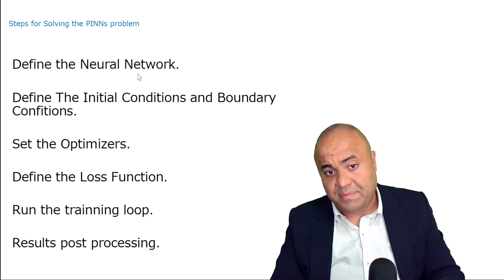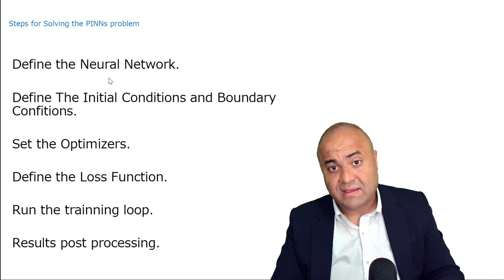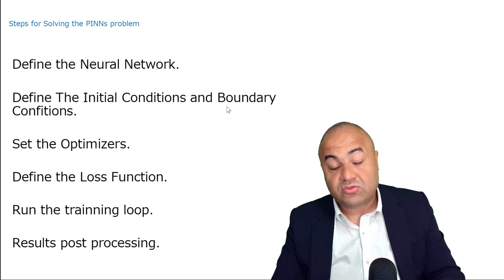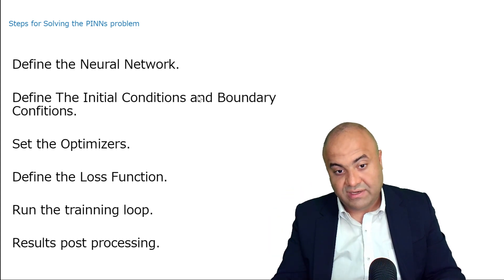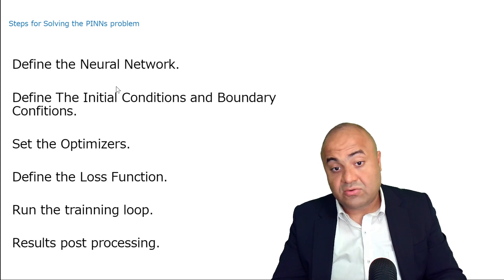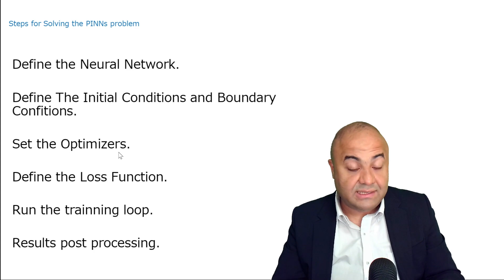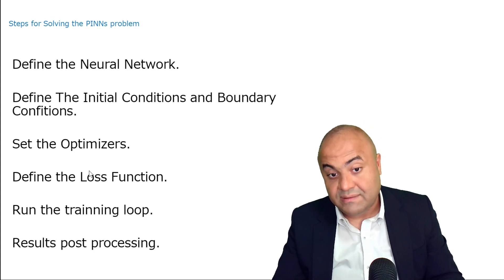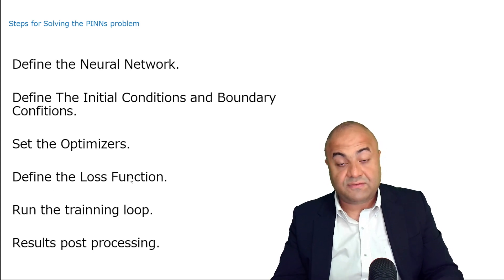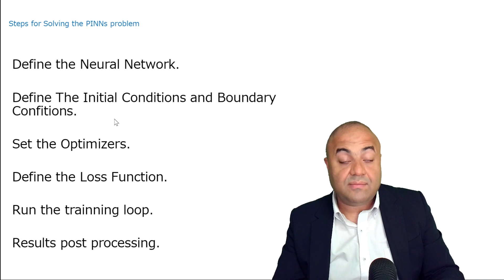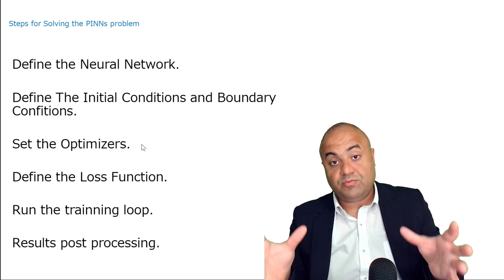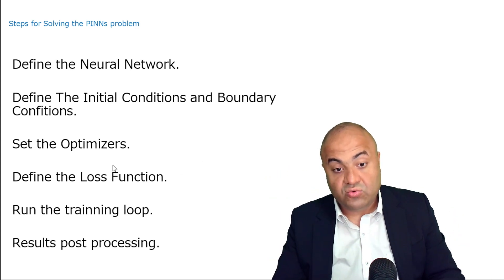In all PINNs problems, we define the PINNs network: how many inputs, how many outputs. Then we define the initial condition and boundary condition to write the loss. Once defined, an optimizer such as Adam is chosen. The loss function combines the initial/boundary condition loss and the domain point loss into a total loss, which is used by the optimizer to train the network.